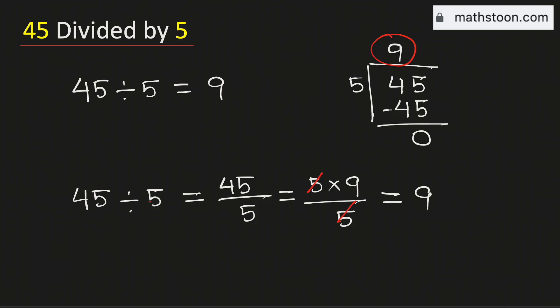Therefore, 45 divided by 5 is equal to 9, which we have obtained in two different methods. And this is our final answer.